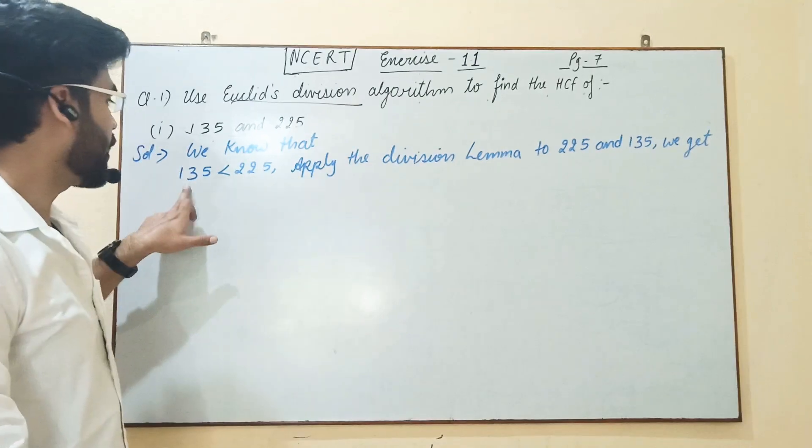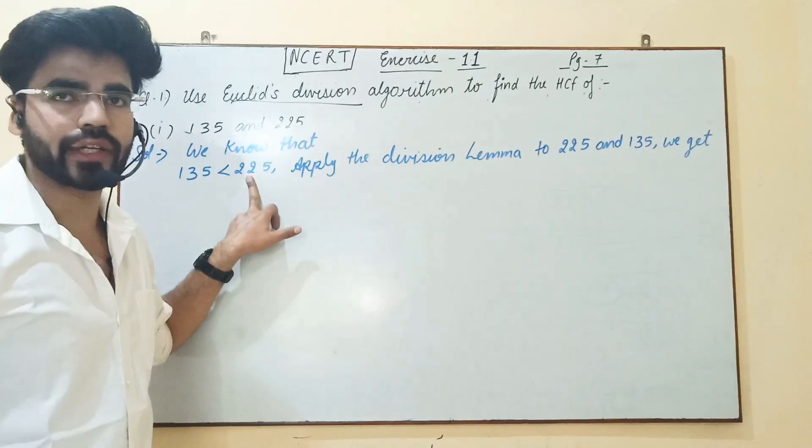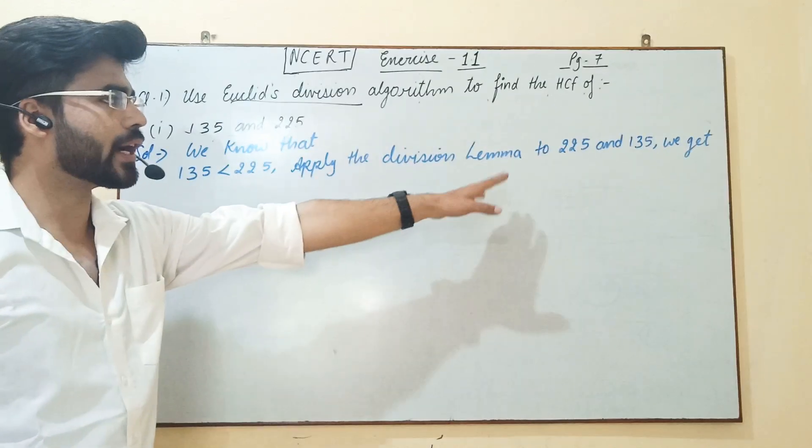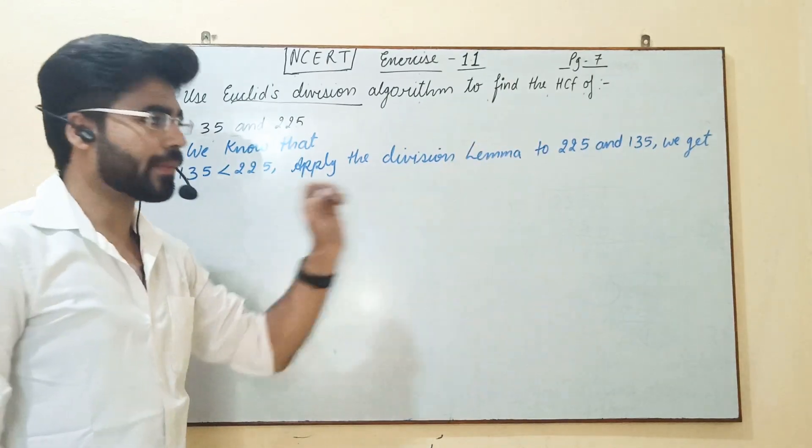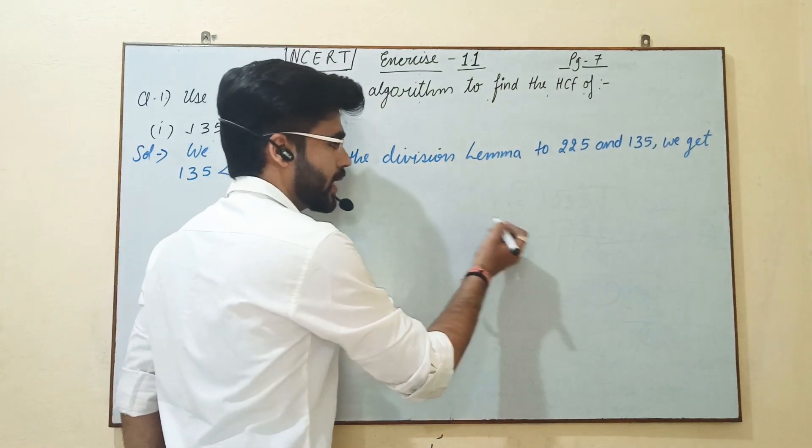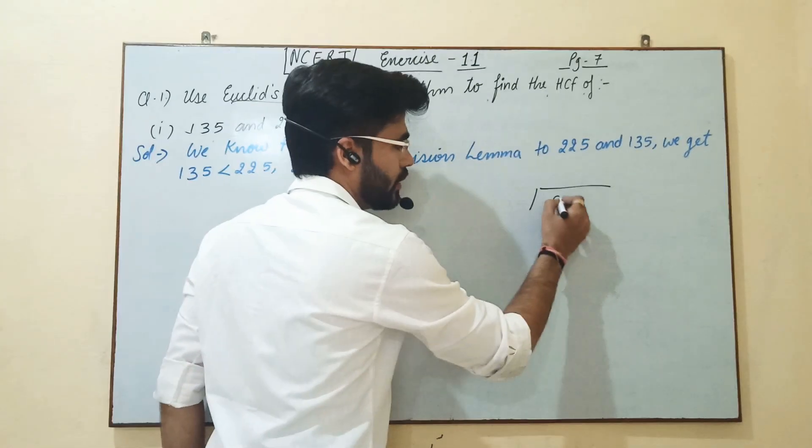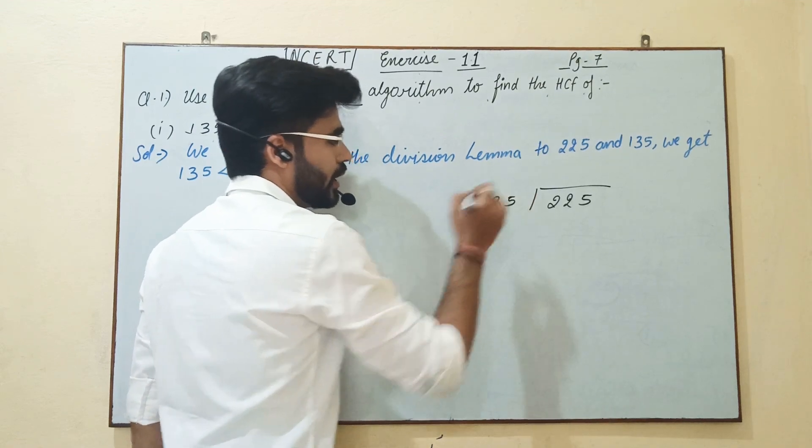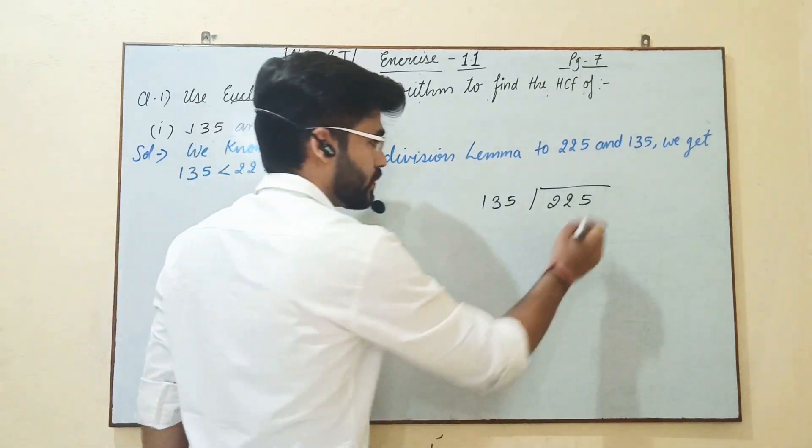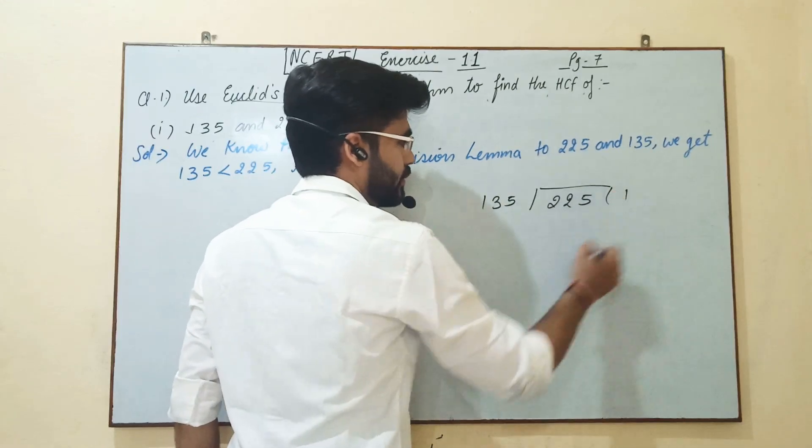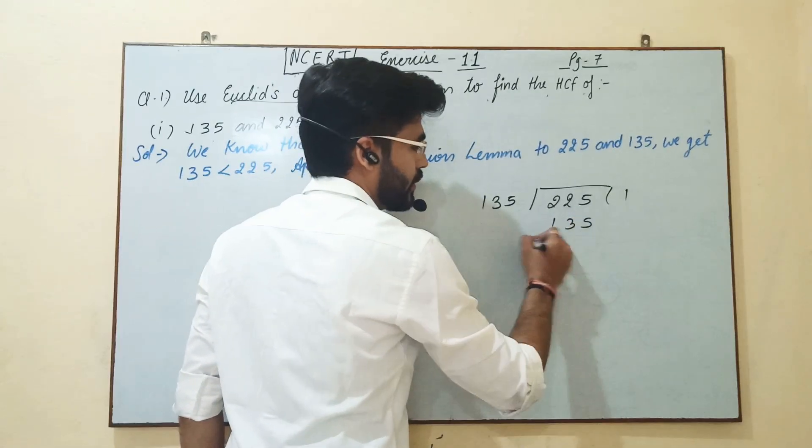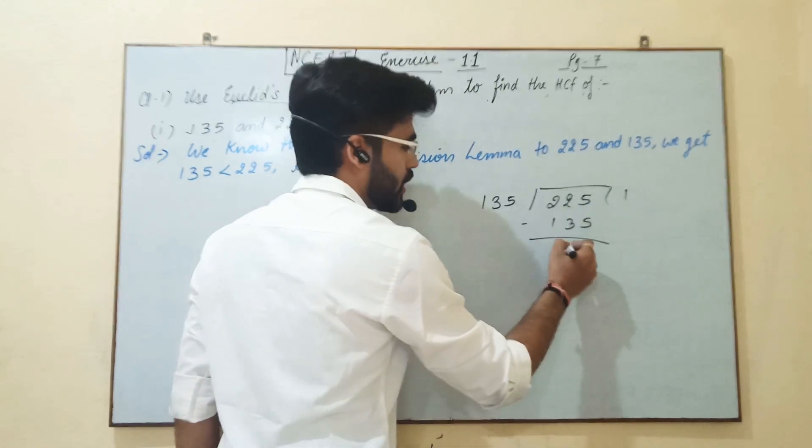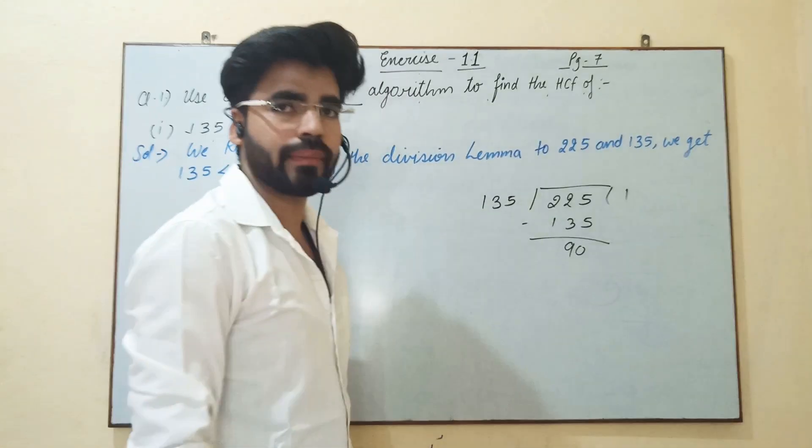We know that 135 is less than 225. Apply the division lemma to 225 and 135 we get - we have to put the bigger value inside and the smaller value outside. Now we have to divide. We have to subtract from 225 to 135, the result is 90.